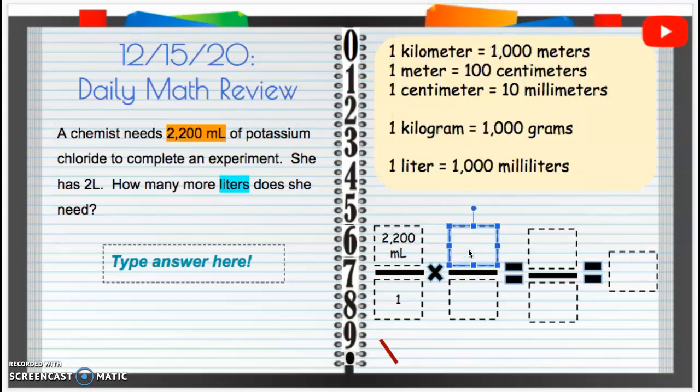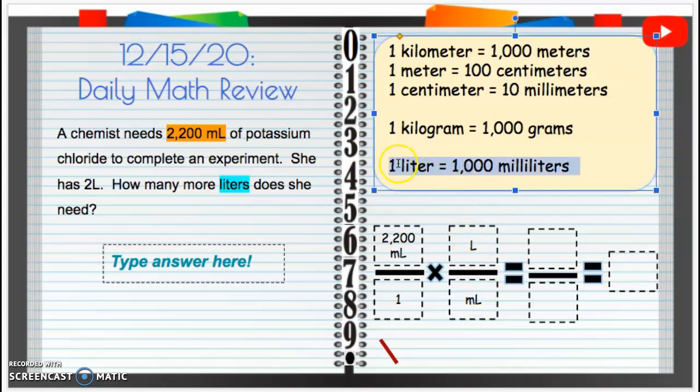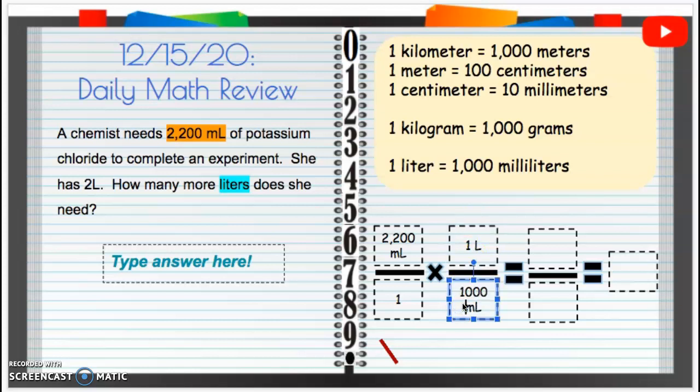We're trying to get to liters and get rid of those milliliters. So we need to look for liters and milliliters. Here we go, liters and milliliters. It says one liter equals 1,000 milliliters.